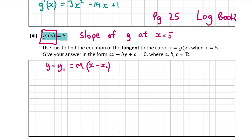So differentiating g of x gives the formula for the slope, and putting in any x value gives the slope at that point. We differentiated g of x in part A2. We're told the first derivative of g of 5 equals 6, meaning that if we put 5 into the answer from part A2 we'd get 6 — that's the slope at x equals 5. So m equals 6, and x1 equals 5.